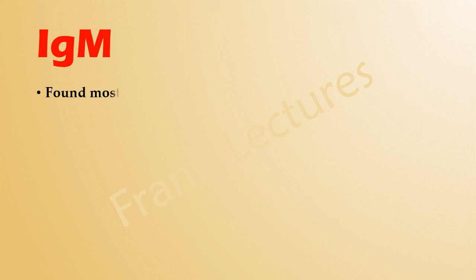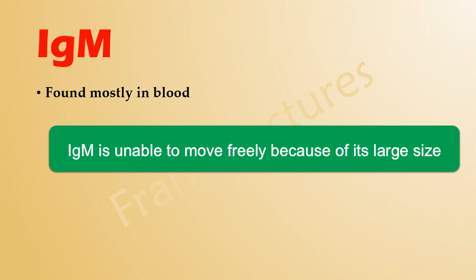Immunoglobulin M is mainly found in the blood. It is unable to move freely because of its large size, and therefore it is not found in other body fluids. The half-life of IgM is about 5 days.